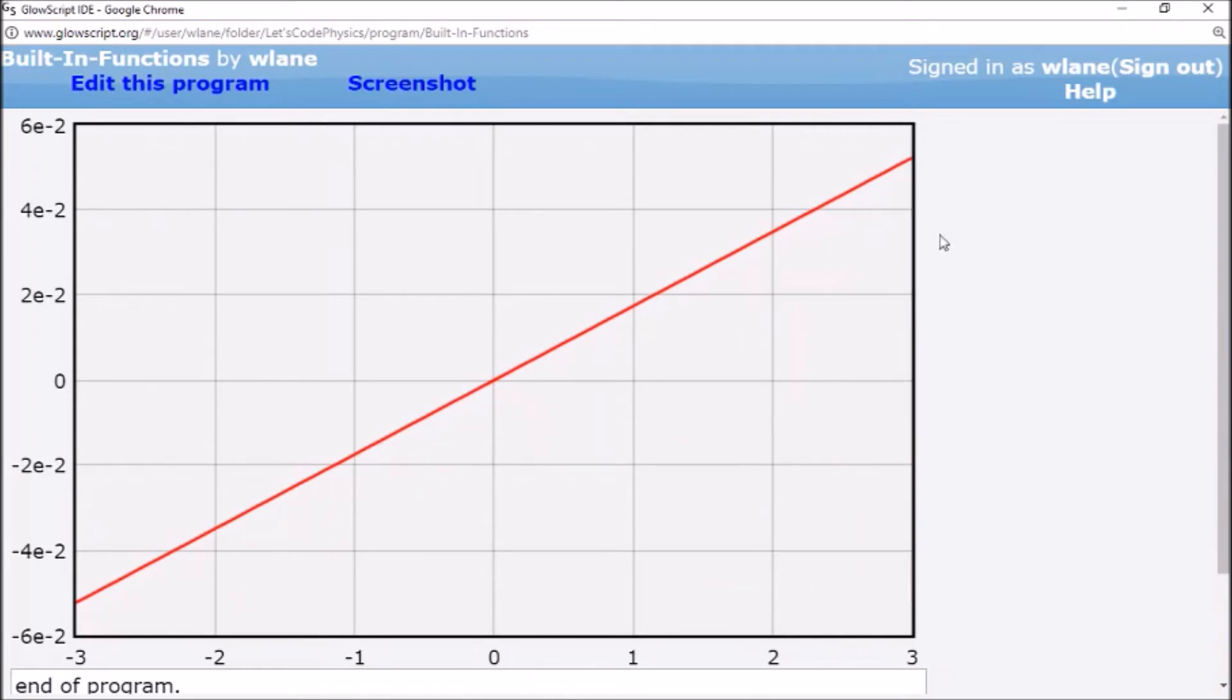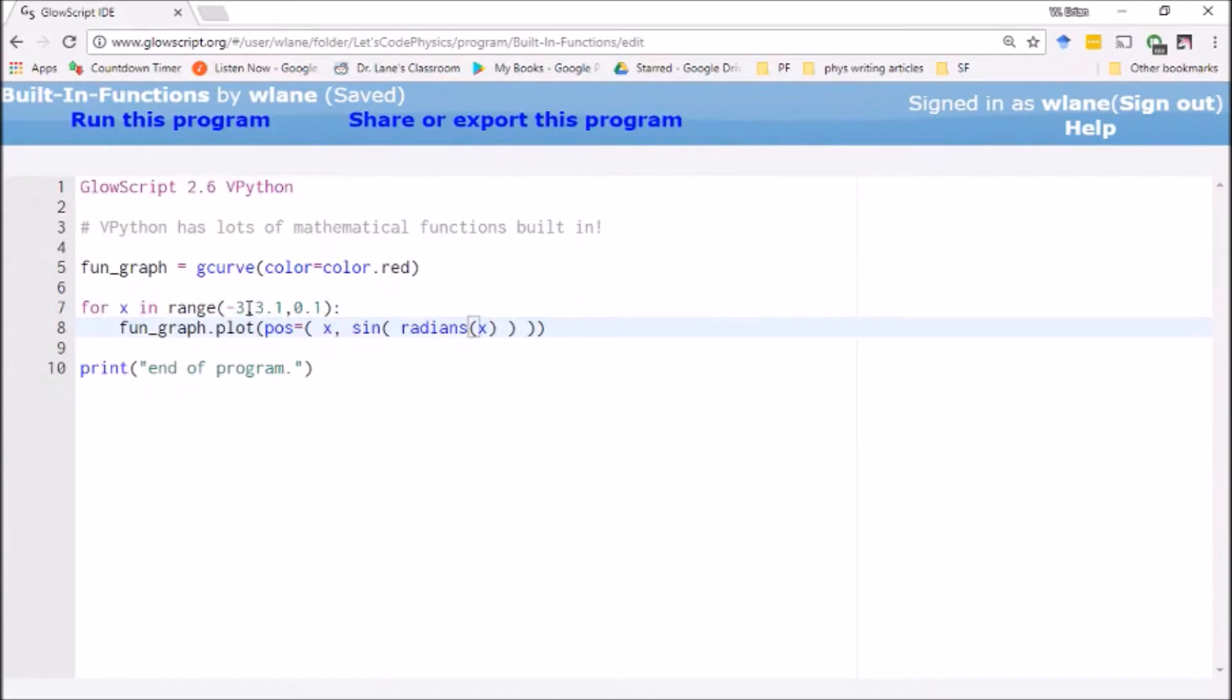And of course, sine of x is a very different graph when you graph it in terms of degrees because it's not going to hit that maximum until pi over 2, until 90. So we would need to expand the range of our for loop here.